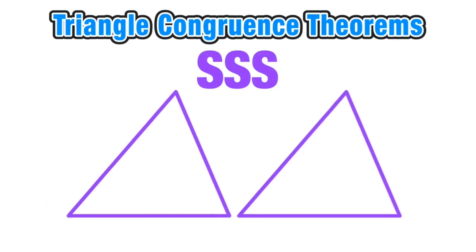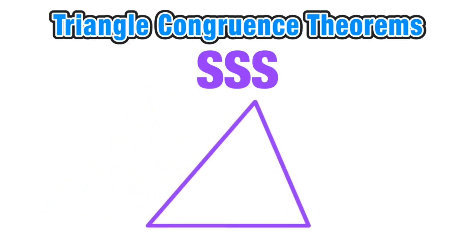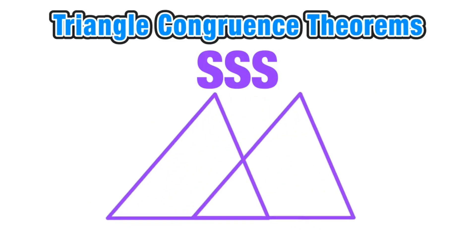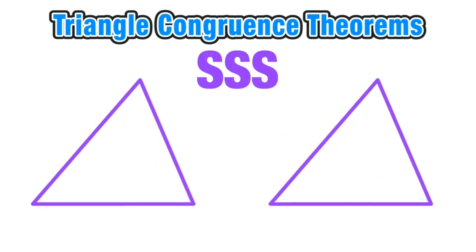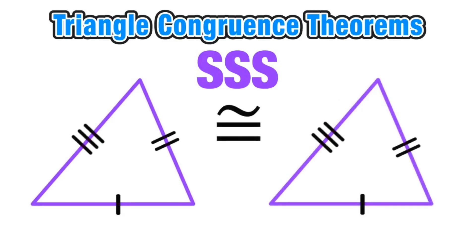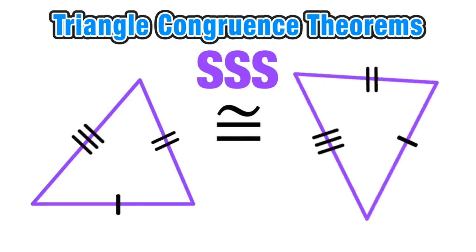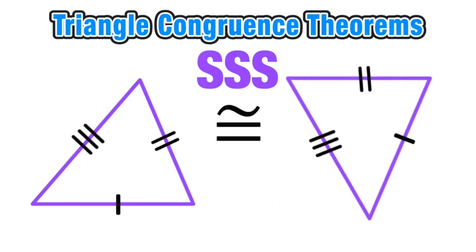In this instance we can use the Side-Side-Side theorem to conclude that the triangles are congruent and that their corresponding sides and corresponding angles have the same measure. Remember that this relationship is still true even if the figures have different orientation.